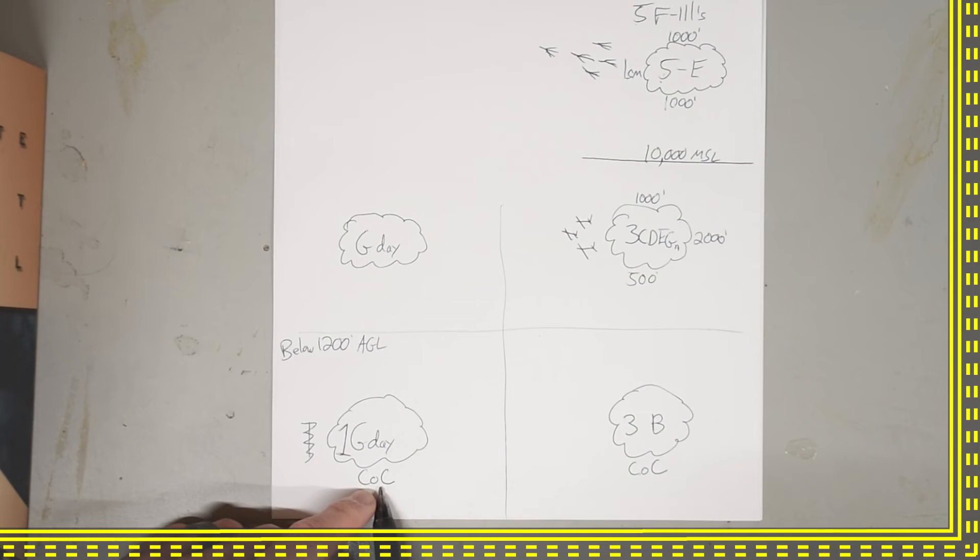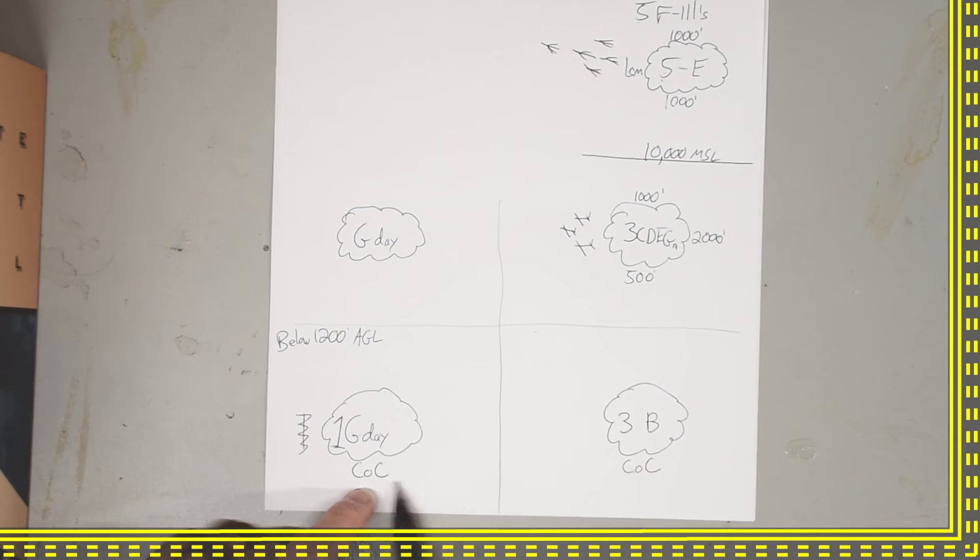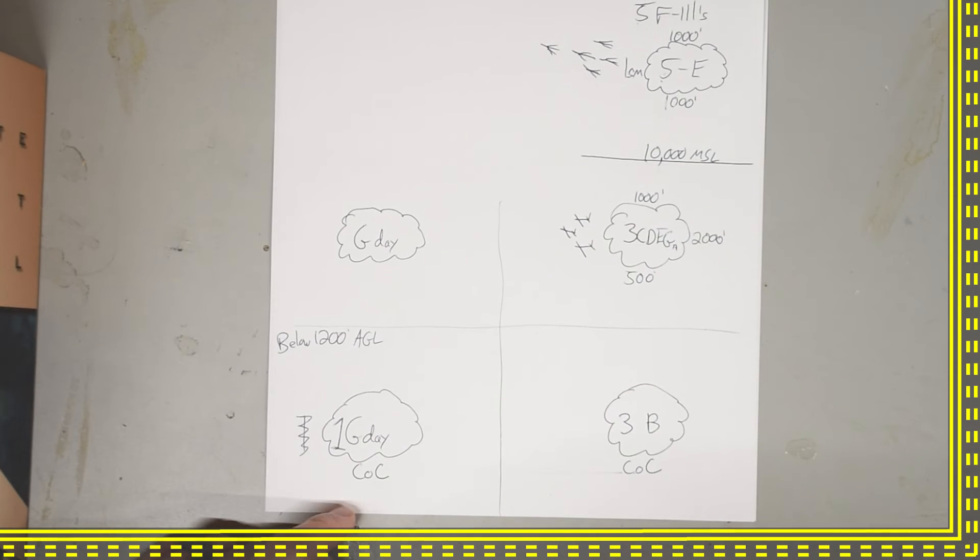So here on this side, our flight visibility. Oh, shoot. I need to put that inside the cloud. One. One G. Regular, uh, regular gravity, regular force of gravity over here. One G. Good day, mate. And we're clear of clouds. So below 1200 AGL during the day, you need one mile visibility and clear of clouds. So this is our similarity here. We're clear of clouds down here in B and G.